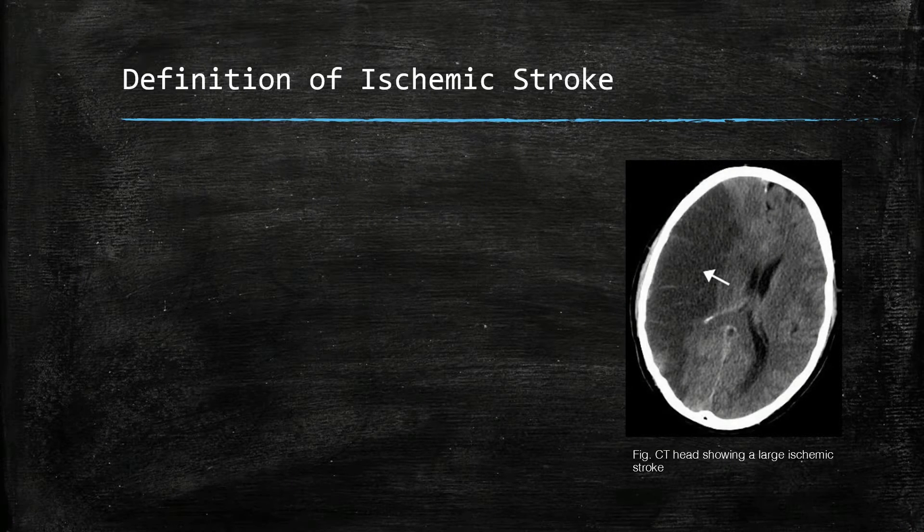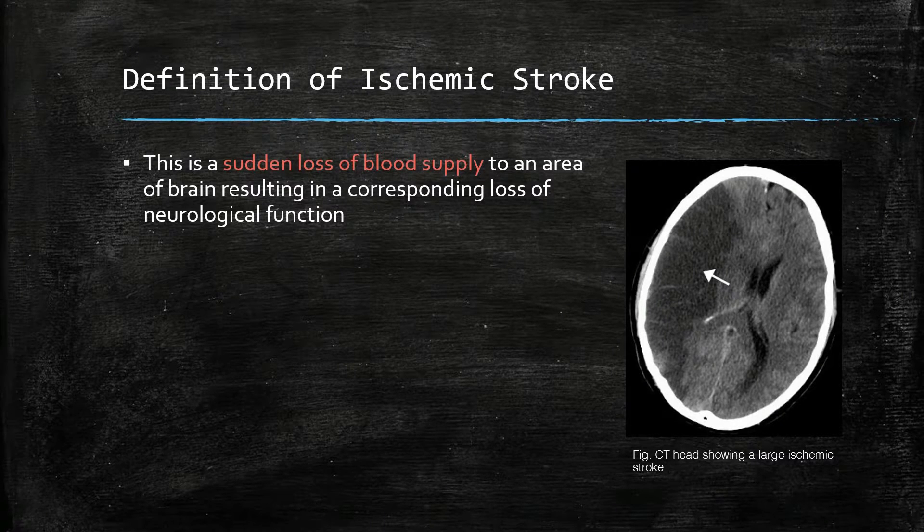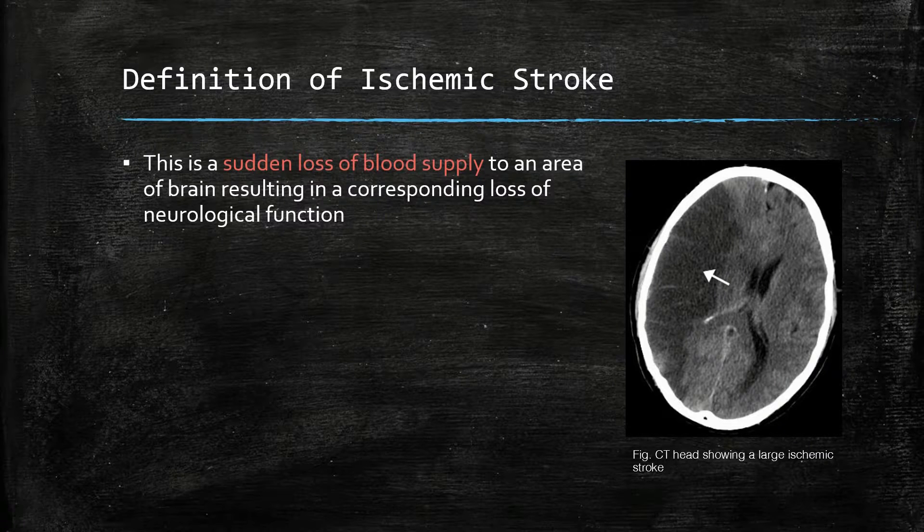An ischemic stroke is defined as a sudden loss of blood supply to an area of brain resulting in a corresponding loss of neurological function.